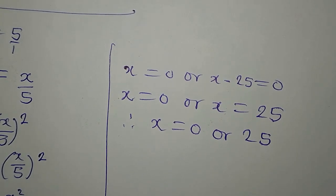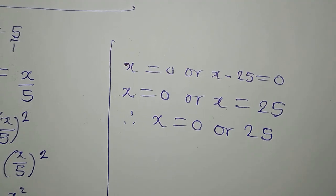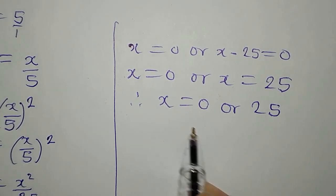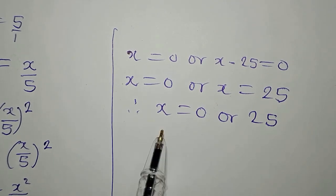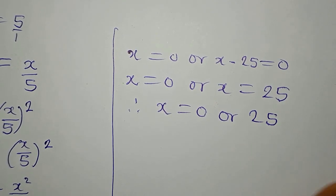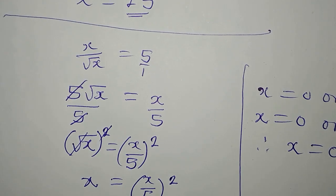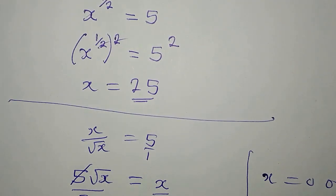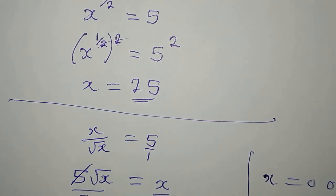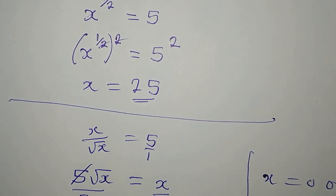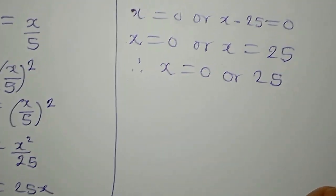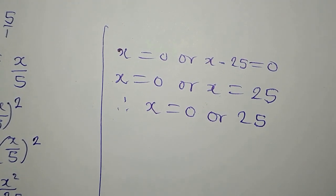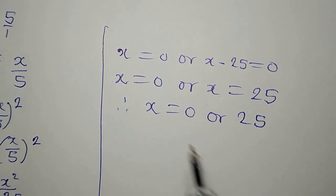But if you look at these two, if you look at this value from the second method, we are getting two solutions, x equals 0 or 25. Then the first solution gave us x to be 25 alone. But now, let's put this back into the equation and see the one that is more effective.